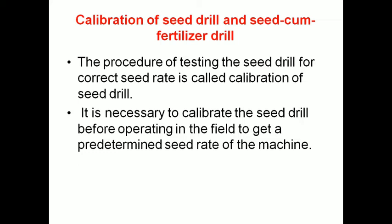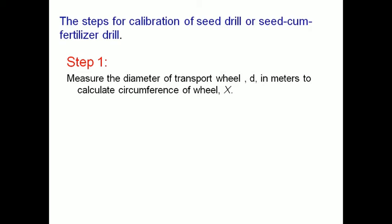It is necessary to calibrate the seed drill before operating in the field to get a predetermined seed rate of the machine. There are different steps to calibrate seed drill or seed cum fertilizer drill. Step 1: Measure the diameter of the transport wheel in meters and denote it by D to calculate the circumference of the circle X. Circumference of wheel X is equal to π multiplied by D, and it should be in meters.